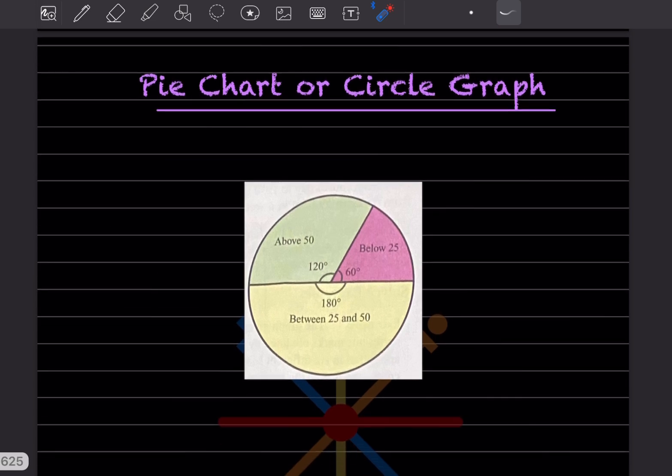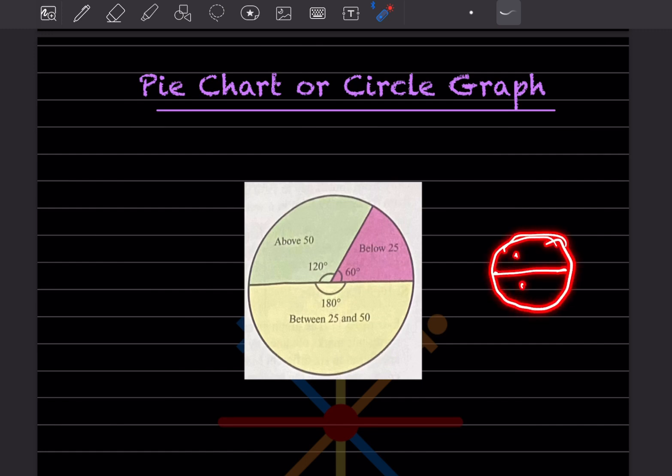Then the pie chart or circle graph. You know this one - the total is 360 degrees. Out of this, this is 180, this is 120, and this is 60. When you add them: 180 plus 60 is 240, plus 120, that is going to be 360 degrees.